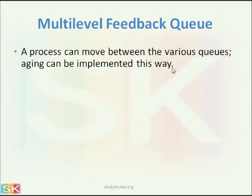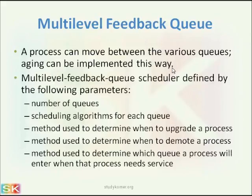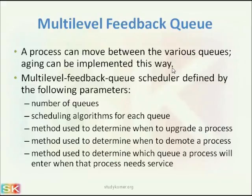A process which is submitted in the lowest priority queue may be shifted to the high priority queue as time passes. The multi-level feedback queue scheduler is defined by the following parameters: number of queues, scheduling algorithm for each queue — that is, within a queue which scheduling policy will be executed — method used to determine when to upgrade a process (that is the solution of aging), method used to determine when to demote a process, and method used to determine which queue a process will enter when it needs some service. These are the parameters we have to decide for a multi-level feedback queue scheduler.